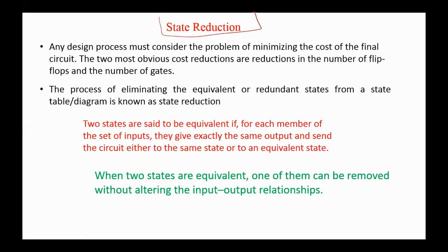Now, regarding state reduction. Any design process must consider the problem of minimizing the cost of the final circuit. The two most obvious cost reductions are reductions in the number of flip-flops and the number of gates. The process of eliminating equivalent or redundant states from a state table or diagram is known as state reduction. Two states are said to be equivalent if, for each member of the set of inputs, they give exactly the same output and send the circuit either to the same state or to an equivalent state.